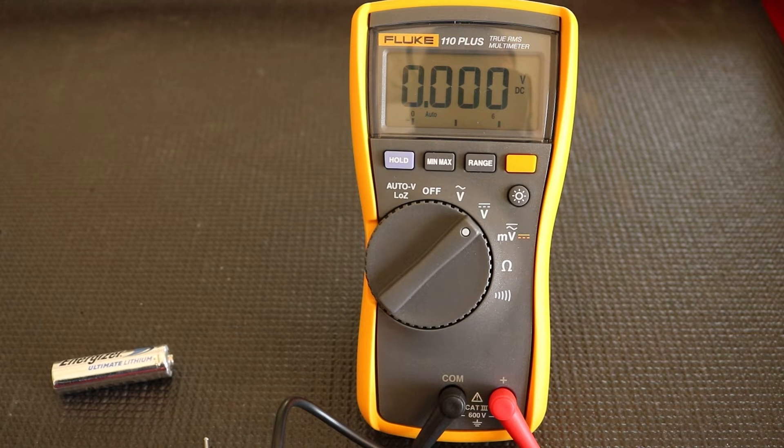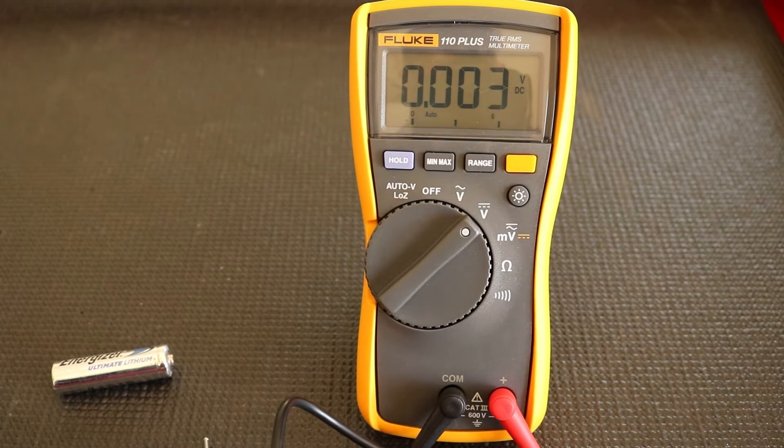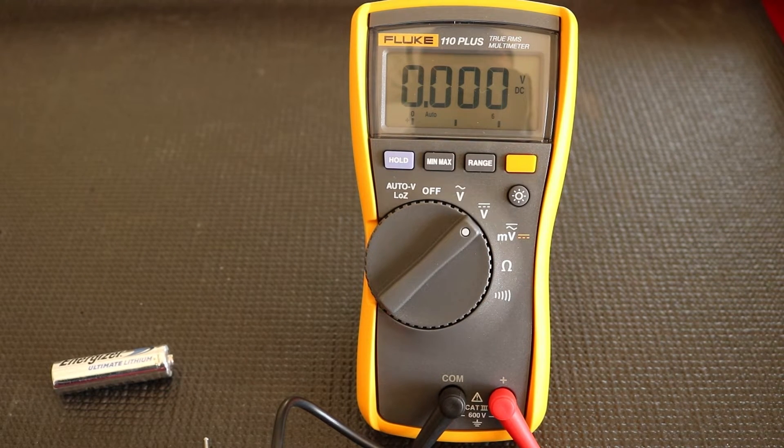Our next button is the minimum, maximum, and average button. This button calculates the minimum and maximum input readings and provides you an average as well. So let's try it out.